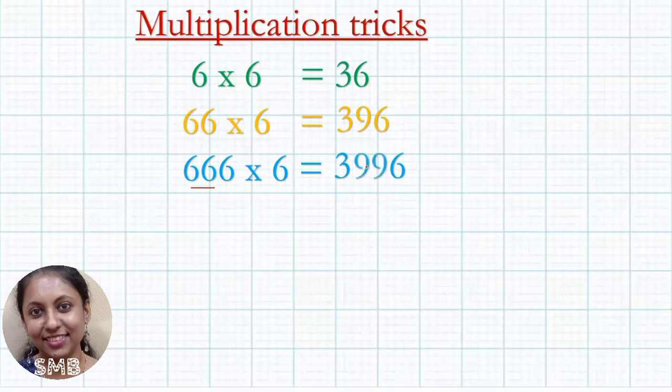Then 6666 into 6, first 3, last 6, and in the middle 3 nines should come. 39996.